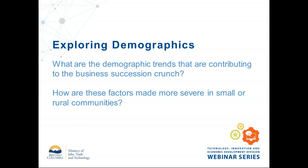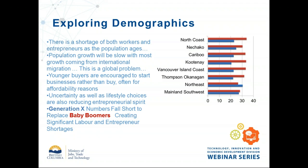What are the demographic trends contributing to the business succession crunch, and how are these factors more severe in smaller rural communities? The first thing is a simple demographic shift — we now have more older people than younger people. If you look at the bars on this graph, the red represents baby boomers and the blue is Gen X. Baby boomers are typically the sellers of businesses, and we actually haven't hit the worst stretch demographically yet — more pain is coming as the later boomers get older and need to sell.